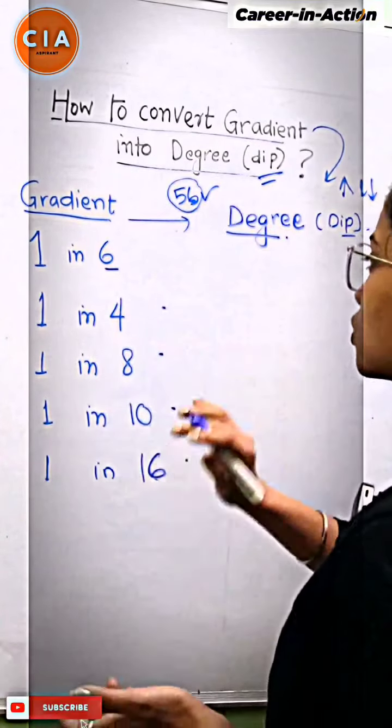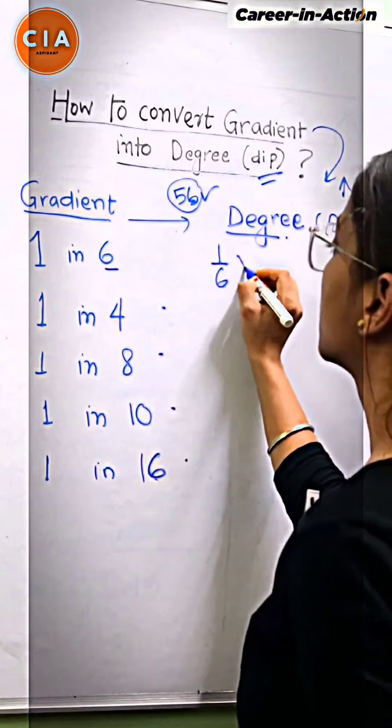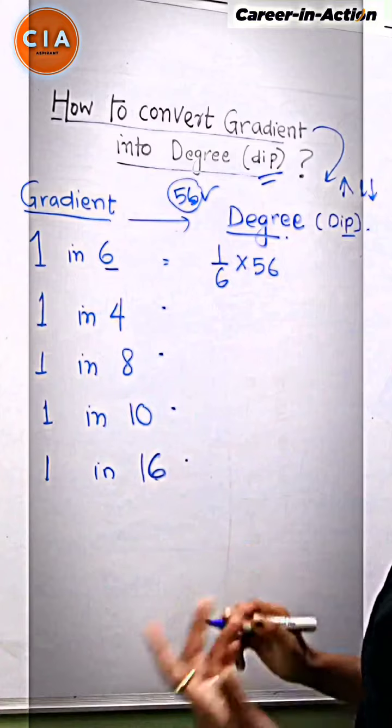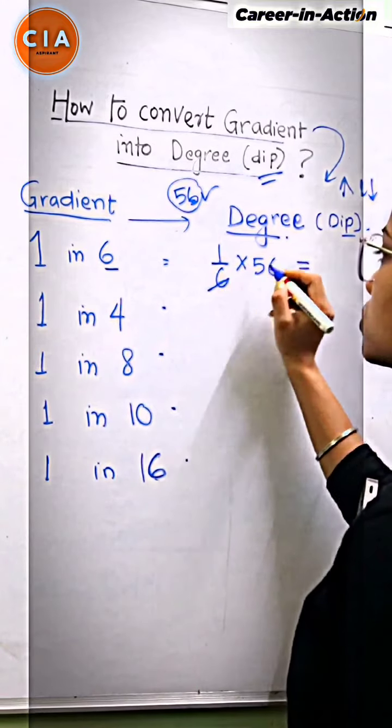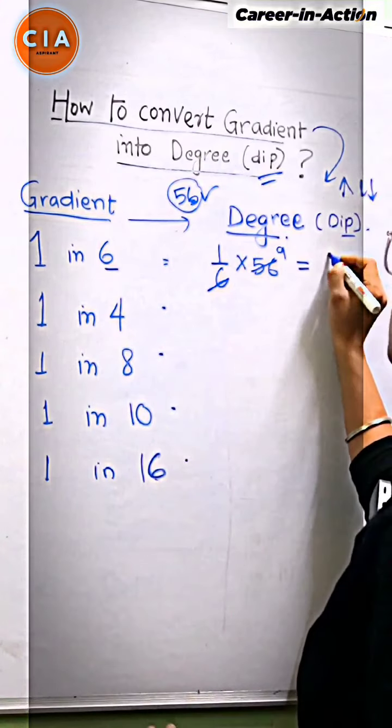Remember how do you do it here? 1 in 6. What do you do? Divide 56 by 6. You will divide it to get degrees. 56 divided by 6 equals 9. Then, you can say 9 degrees.